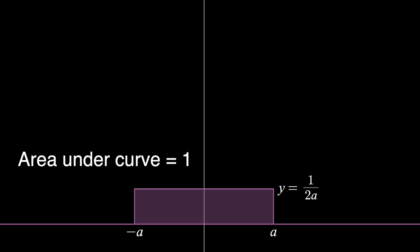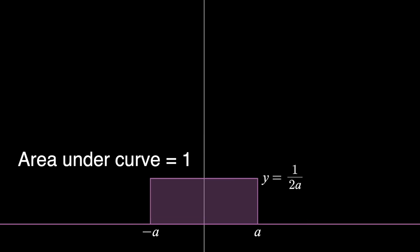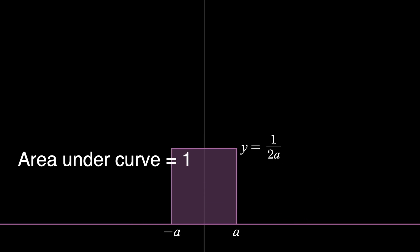As we let a approach zero, the rectangle becomes skinnier and taller, but the area under the curve remains the same.